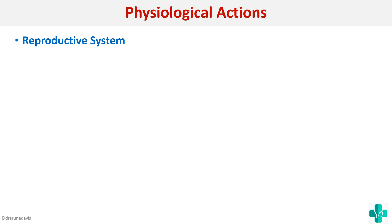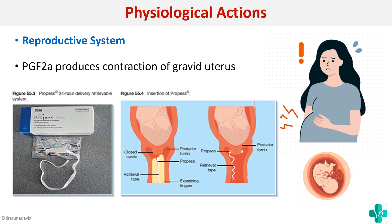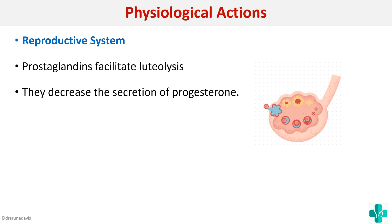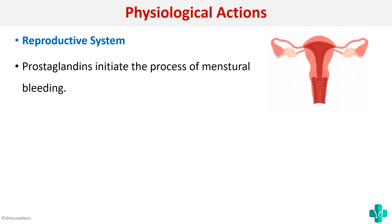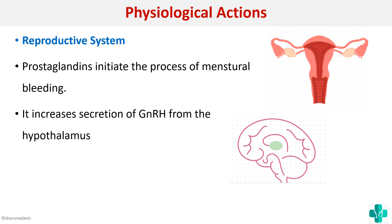PGE2 can also be used for the delivery of the baby. PGE2 can produce contraction of the gravid uterus and thus help in delivery. When this prostaglandin is inserted into the cervix, it helps in softening the cervix and also promotes uterine contractions so that the baby can be expelled. Additionally, prostaglandins can facilitate uterine lysis and decrease the secretion of progesterone. They can also initiate the process of menstrual bleeding and increase the secretion of GnRH from the hypothalamus.